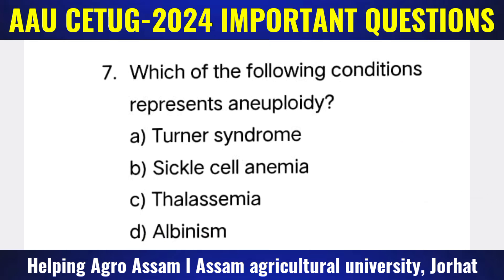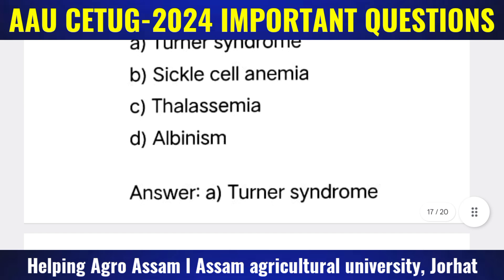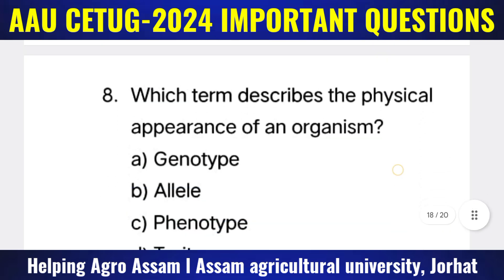Question 7: Which of the following conditions represents aneuploidy? Options: (A) Turner syndrome, (B) Sickle cell anemia, (C) Thalassemia, (D) Albinism. The correct answer is option A — Turner syndrome.